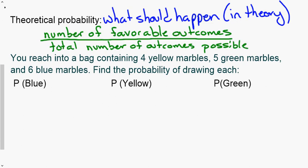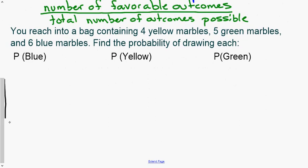So the probability of rolling a one is one out of six sides. When writing probability, we use a capital P — for example, P(1) means the probability of rolling a one. Now for a problem: you reach into a bag containing four yellow marbles, five green, and six blue. The first thing to do is find the total.